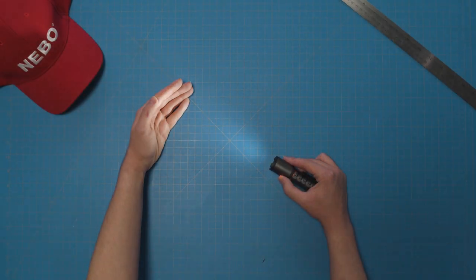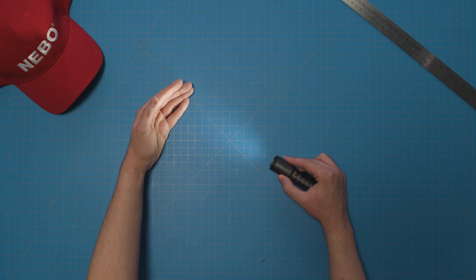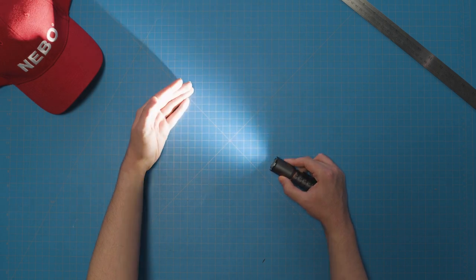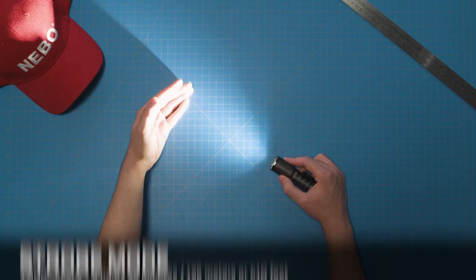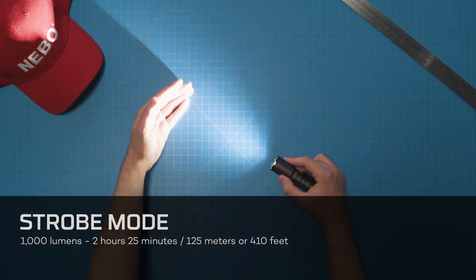The fifth and final light mode of the Torchy 2K is strobe mode, which can be activated by double-clicking the power button at any time. In strobe mode, the light is up to 1,000 lumens for a runtime of 2 hours and 25 minutes, shining at a distance of up to 125 meters or 410 feet.